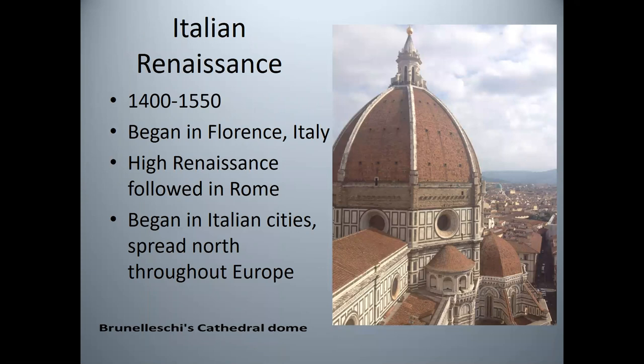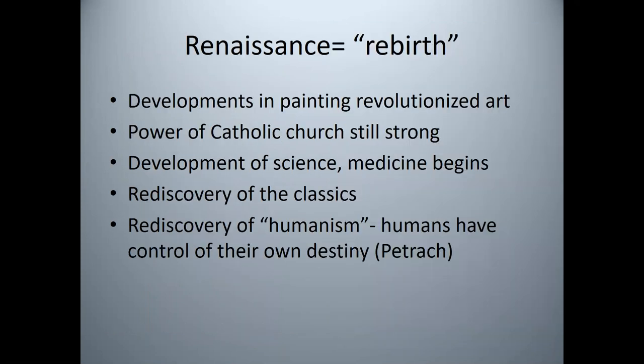The Italian Renaissance began in Florence, Italy around 1400, followed by the High Renaissance in Rome. The Renaissance began in Italian cities and spread north throughout Europe in the late 15th and early 16th century. The term Renaissance is a French word meaning rebirth and is characterized by strong developments in painting that revolutionized art, strong power of the Catholic Church, development of science and modern medicine, rediscovery of the classics, and humanism — the idea that humans have control of their own destiny.